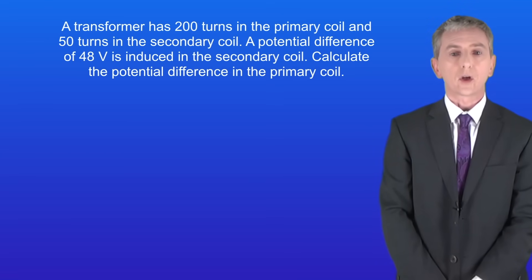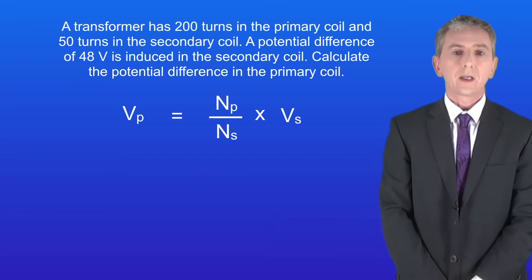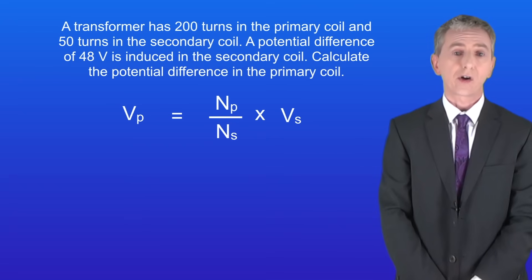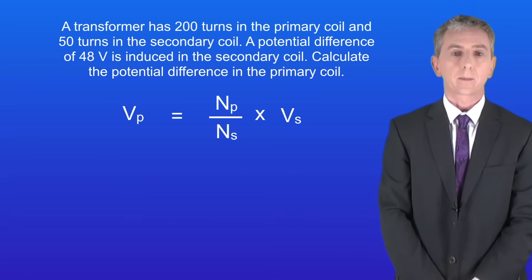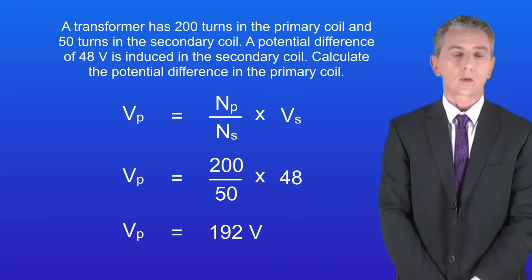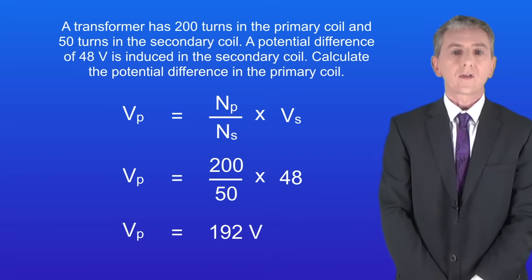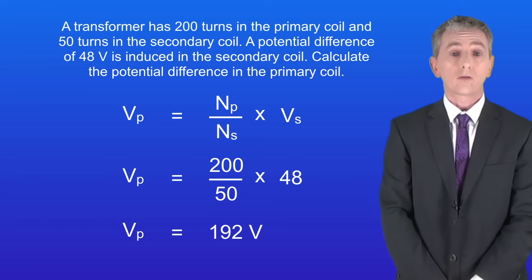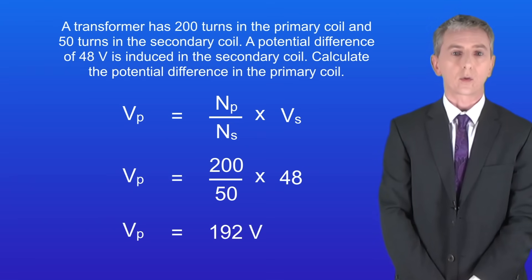Pause the video and try this yourself. We need to rearrange the equation to find the potential difference in the primary coil. Putting in the numbers gives a value of 192 volts. We can see that this is a step-down transformer, as 192 volts has been stepped down to 48 volts.